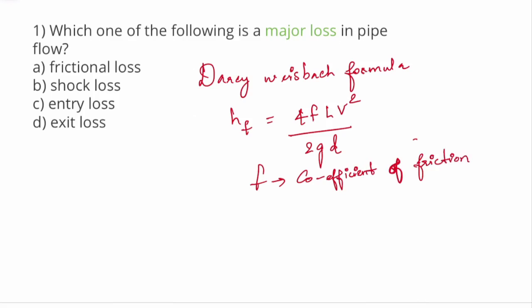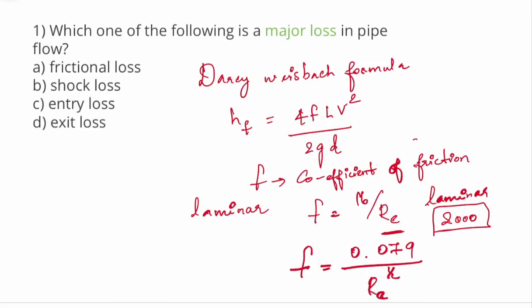It is a function of Reynolds number. Suppose flow is laminar, F would have a value 16 divided by Re, where Re is Reynolds number. It is laminar. Suppose flow is turbulent, the friction factor would have a value 0.079 by Reynolds number to the power of 1/4.